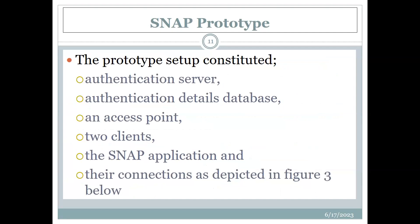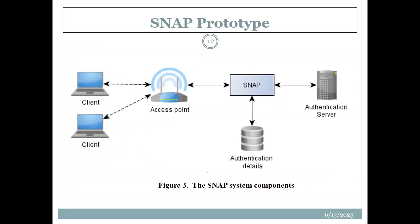The prototype setup constituted the following: an authentication server which contains the application; an authentication details database where all authentication credentials are managed, stored, and retrieved; an access point; and two clients — one valid and one that can be disallowed — to see the results. The other component is the SNAP application, and finally the connections, as shown in diagram three.